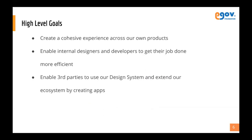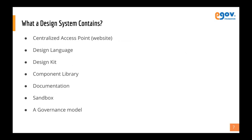When we started our design system we had very high-level goals: creating a cohesive experience across our own products, enabling designers and developers to work more efficiently together, and enabling third parties to use and extend our system. A design system contains a centralized access point, design languages, a design kit in tools like Figma or Sketch, component libraries with documentation for developers, a sandbox for developers to play around with components, and a governance model for third-party collaboration.